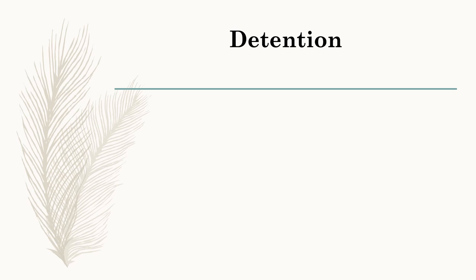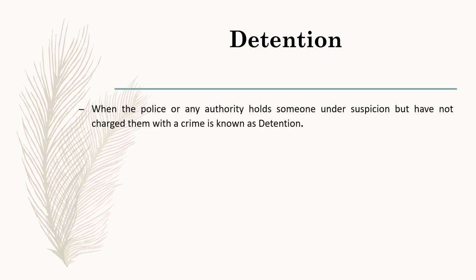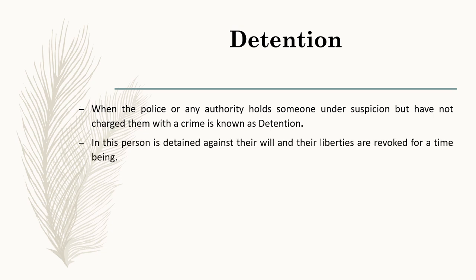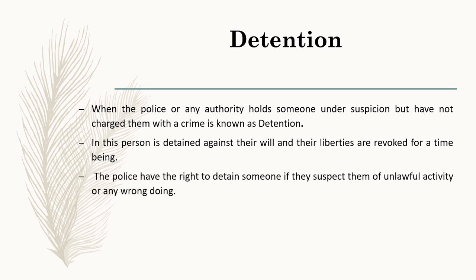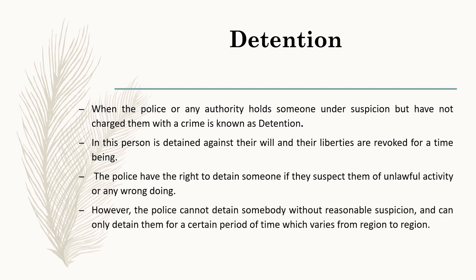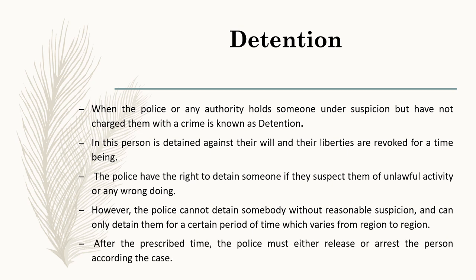The first one is Detention. When the police or any authority holds someone under suspicion but have not charged them with a crime, it is known as Detention. In this, a person is detained against their will and their liberties are revoked for the time being. The police have the right to detain someone if they suspect them of unlawful activities or any wrongdoing. However, the police cannot detain someone without reasonable suspicion and can only detain them for a certain period of time which varies from region to region. After the prescribed time, the police must either release or arrest the person according to the case.